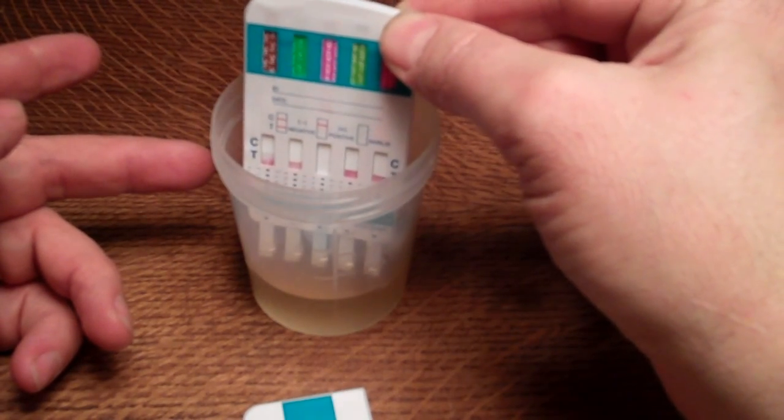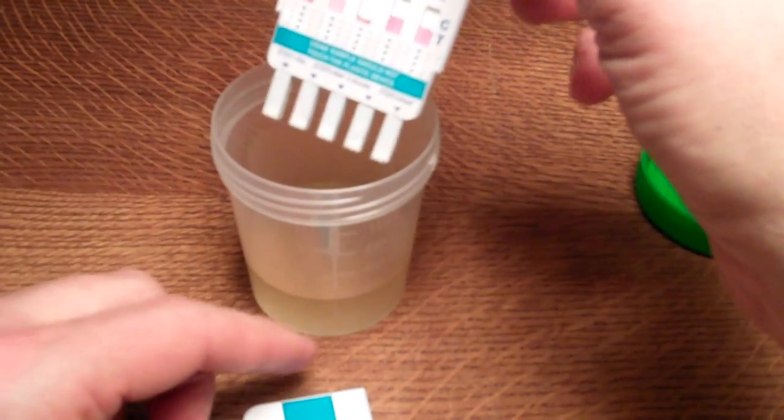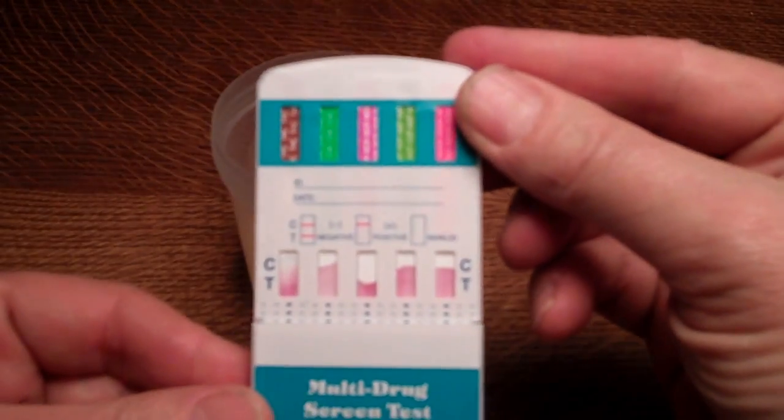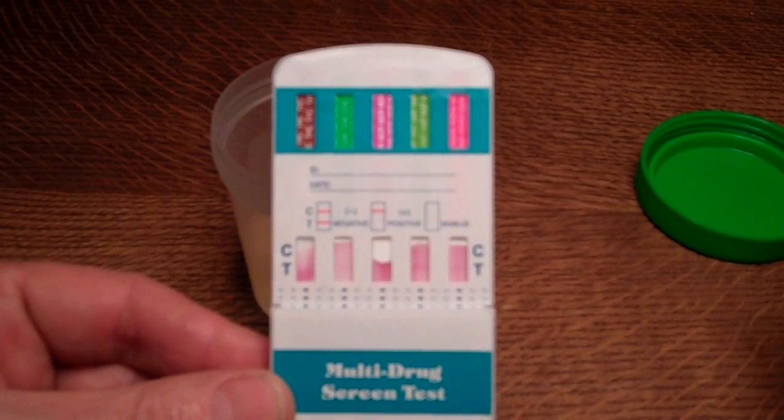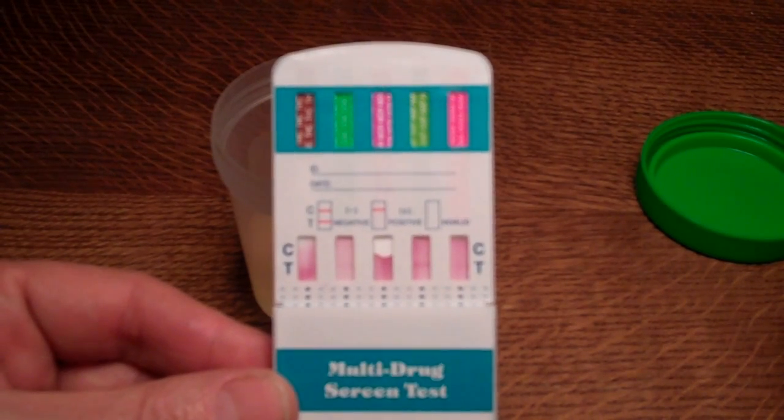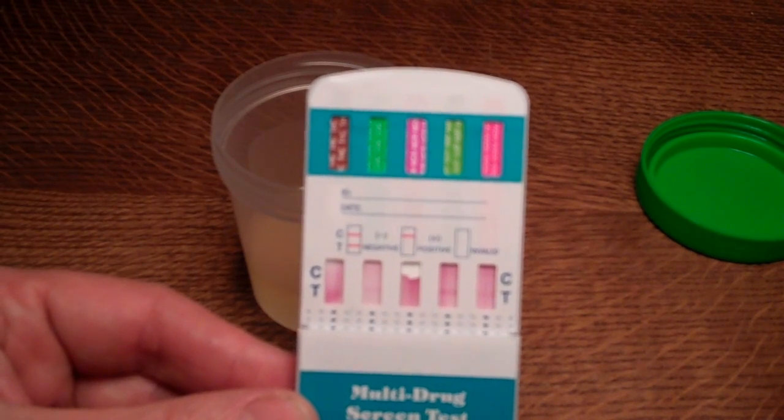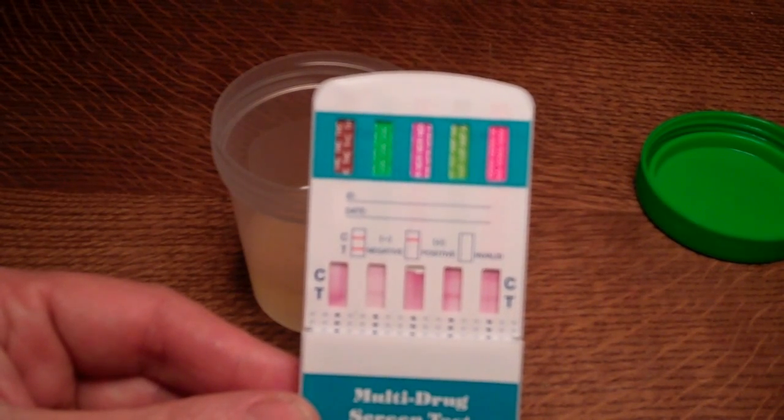A good indicator that you've dipped it for sufficient time is that you can start to see the dye running up in the test windows. So I'll just give that a little shake, reapply the cover at that stage, and what we'd normally do is lay this on a flat surface and wait for the test membranes to run. But I'm going to hold this in front of the camera because there's perfectly enough osmotic pressure to run these test membranes with them being held on an angle like this.